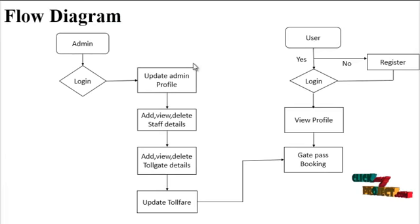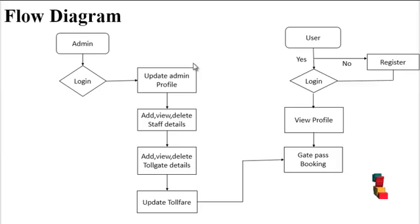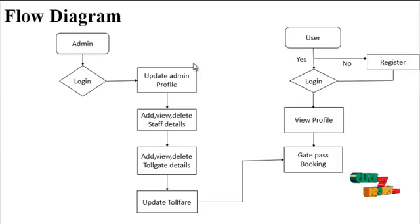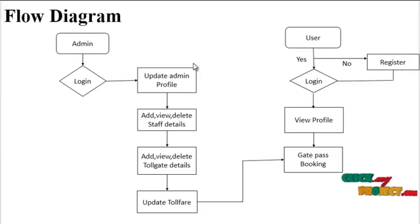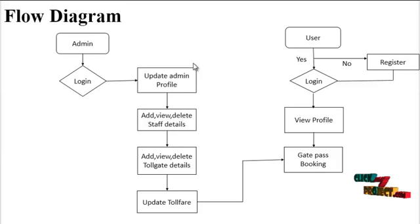Let's see our project data flow diagram. In our system, it is easy and interesting to get their Tollgate pass through our system. There are two models: admin and user. Admin initially logs in with username and password. Admin has rights to update admin profile, add, view, and delete staff details, add, view, and delete Tollgate details, and update Tollfare.